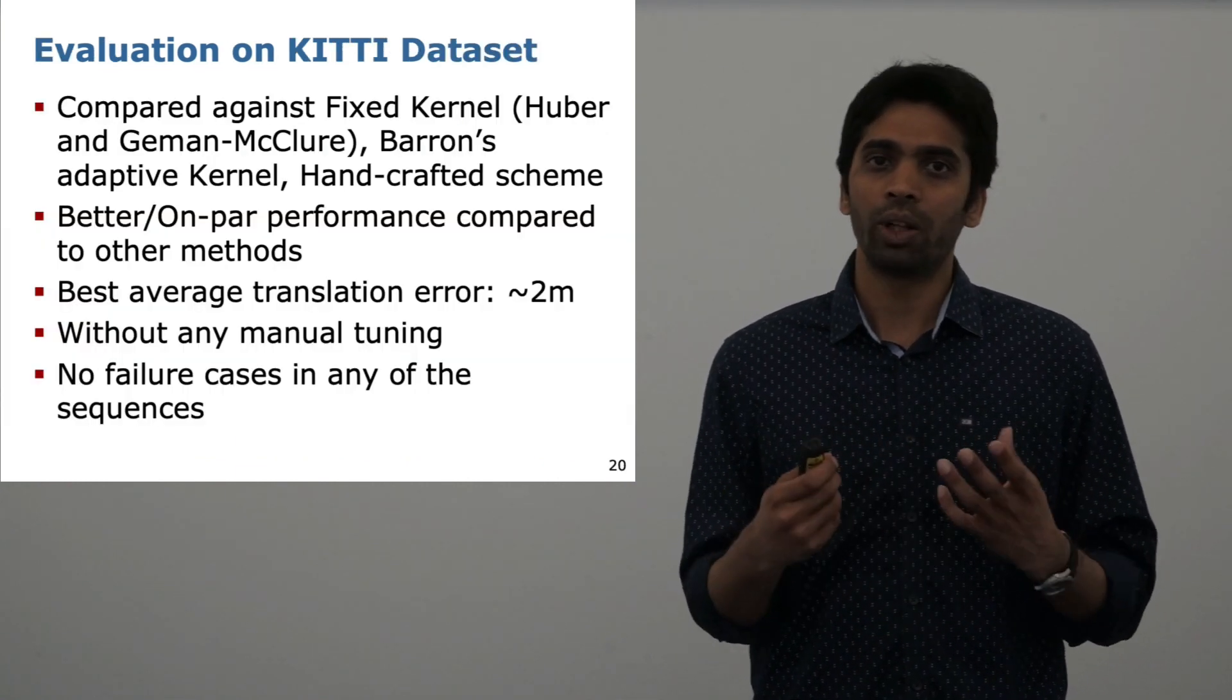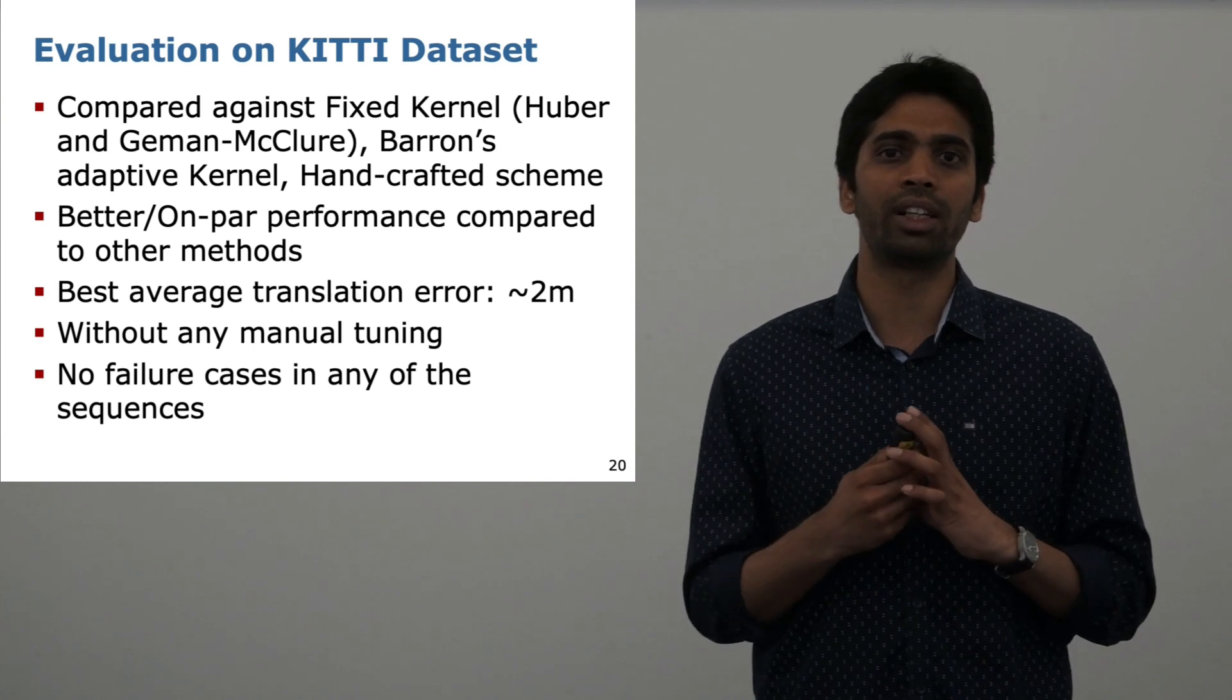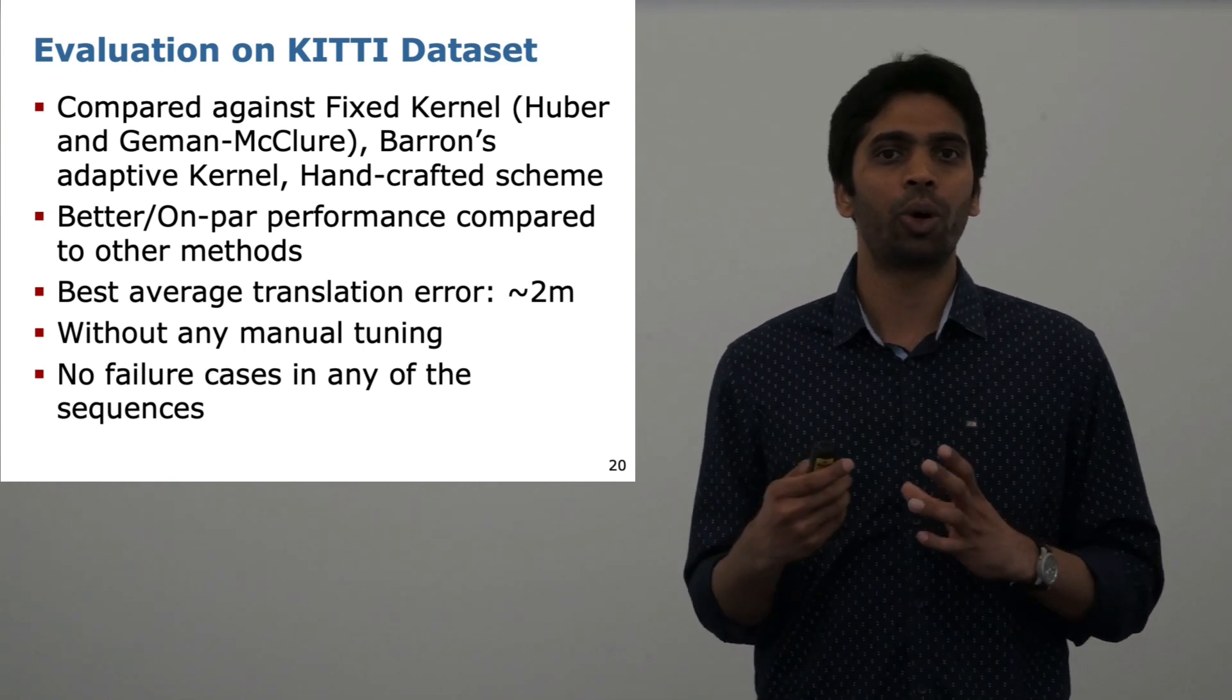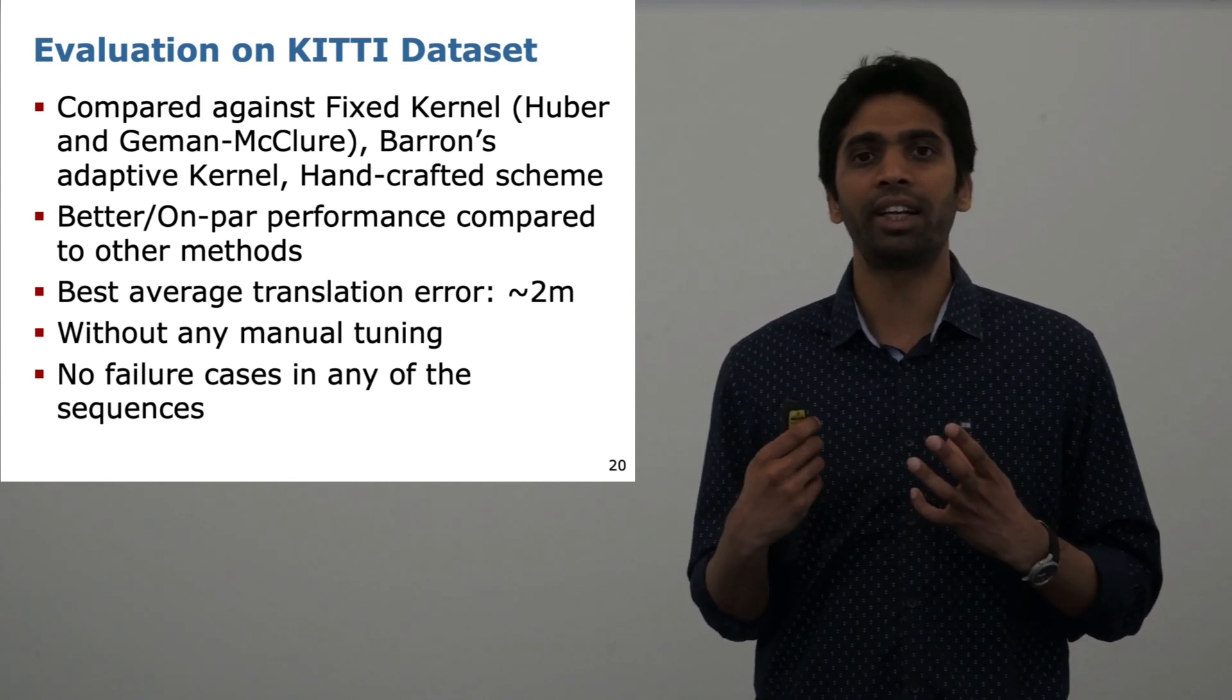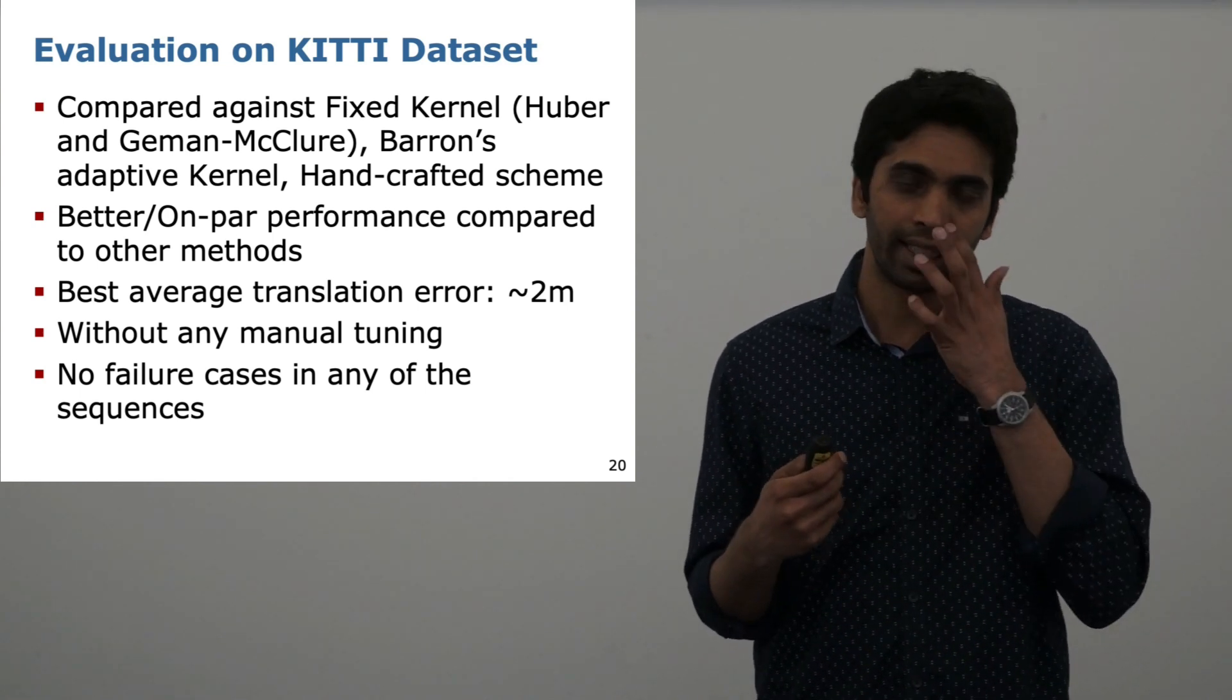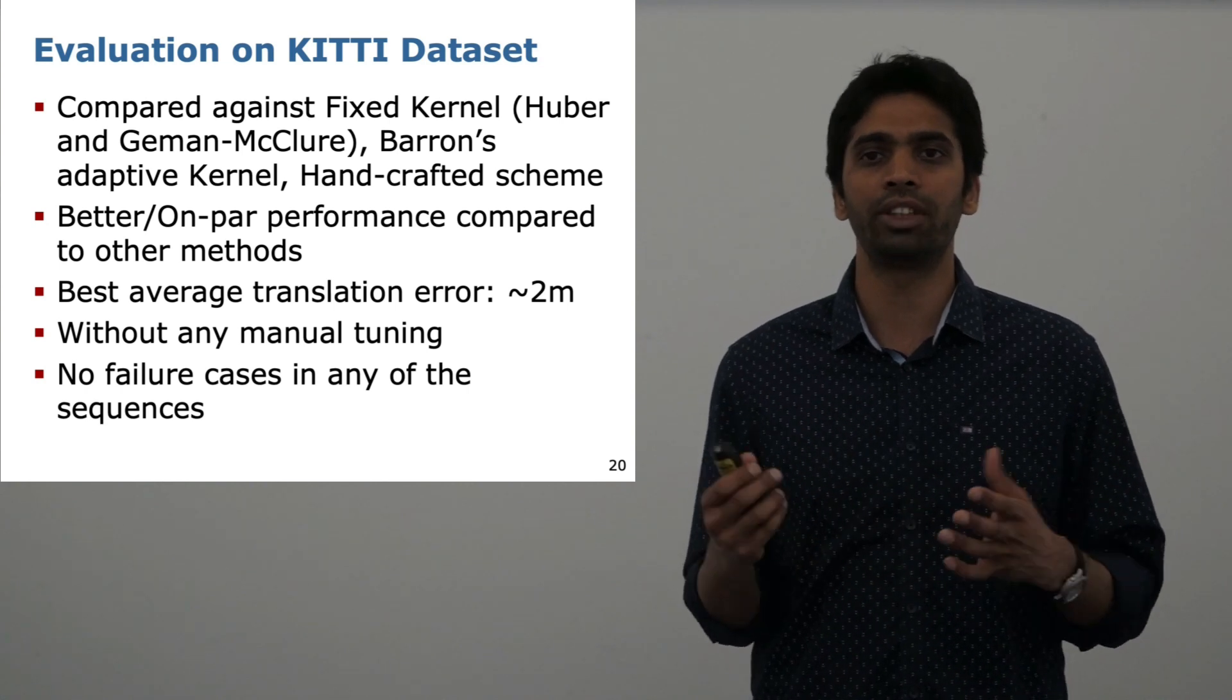We also did a more extensive evaluation on the KITTI dataset and made the comparison against several fixed kernels such as the Huber kernel, the Geman-McClure kernel, as well as Barron's original adaptive kernel, and a couple of other handcrafted schemes. We show that we are better or at least on par performance as compared to other methods. The advantage being that in our method, we didn't require any manual tuning. Just to give you an order of error, we are in the range of 2 meters in terms of translation error. I would like to note here that we didn't have any failure cases in any of the sequences that we tested.